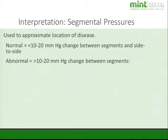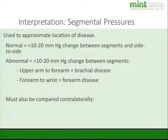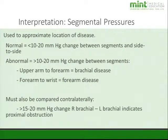Abnormal segmental pressures must show more than 10 to 20 mmHg change between segments. A change from the upper arm to the forearm would indicate brachial disease; forearm to wrist would indicate forearm disease. You must also compare contralaterally — if there's a change from right to left brachial, there is likely a proximal obstruction, probably in the subclavian arteries.